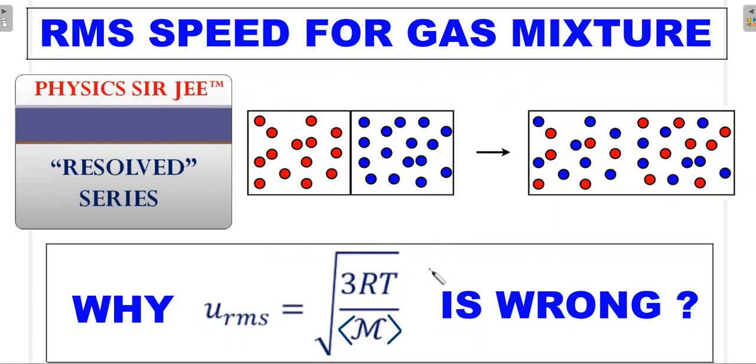There is a usual formula that goes by in certain textbooks and coaching materials which at the bottom you could see: square root of 3RT by average molecular weight. This average molecular weight concept is also used in calculating the velocity of sound in that particular ideal gas. So is that concept correct or if not, what is wrong with it and what is the correct relation for the RMS speed when two or more ideal gases are mixed with each other?